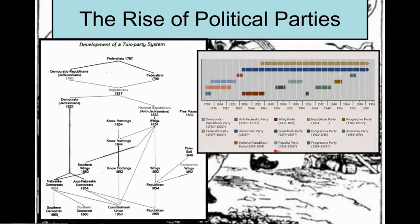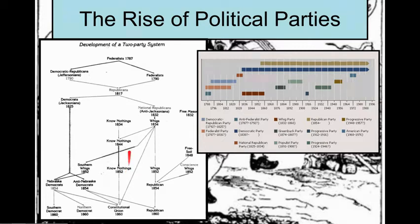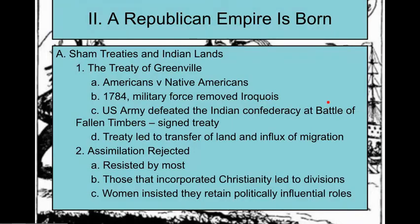This slide shows political parties rising up and shifting — highly recommend getting this into your notes. The Know-Nothings are coming along soon. Right now we have the Jeffersonians and the Federalists, and they're both going to split and become branches of what's called the Republicans — the Jeffersonian Republicans and the National Republicans.